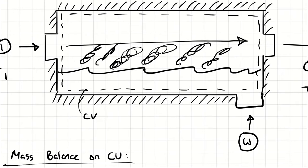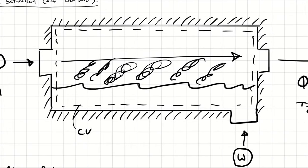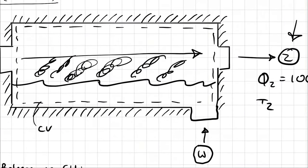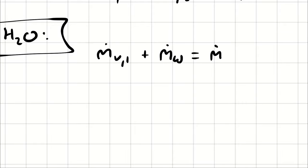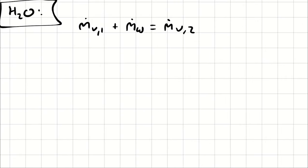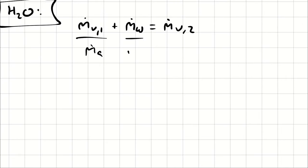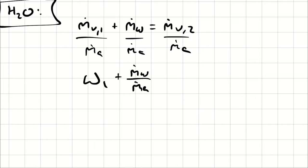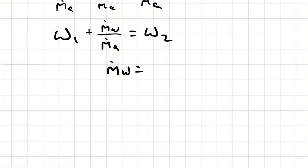On the water vapor side, there are three opportunities for water to cross the boundary: water vapor entering at state 1, liquid water entering at state w, and water vapor exiting at state 2. Dividing everything by ṁ_a, we get ṁ_v1/ṁ_a1 — which equals the humidity ratio ω₁ — plus ṁ_w/ṁ_a equals ω₂. It's convenient to write the mass flow rate of water entering as ṁ_a times (ω₂ − ω₁).